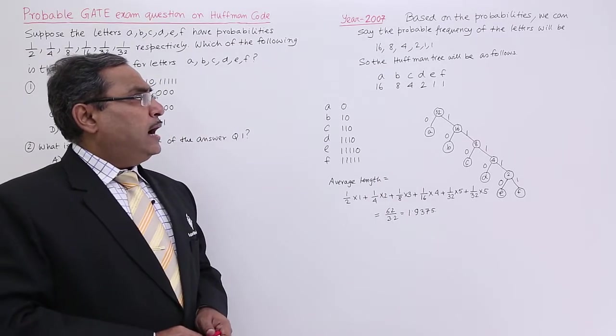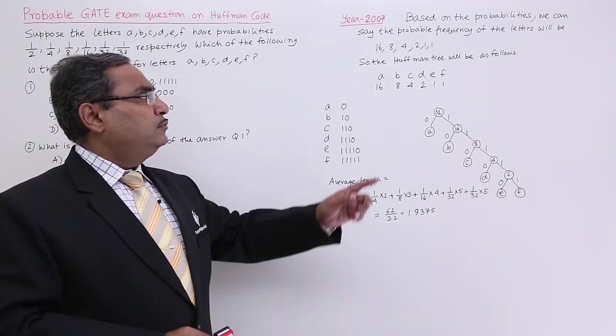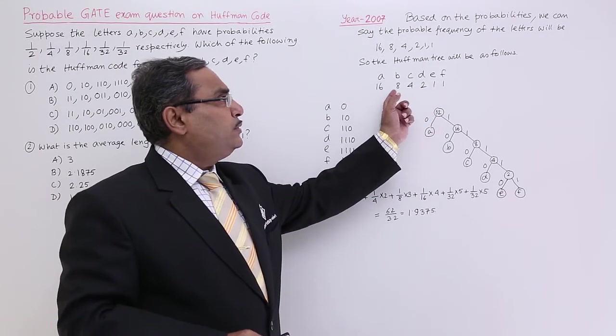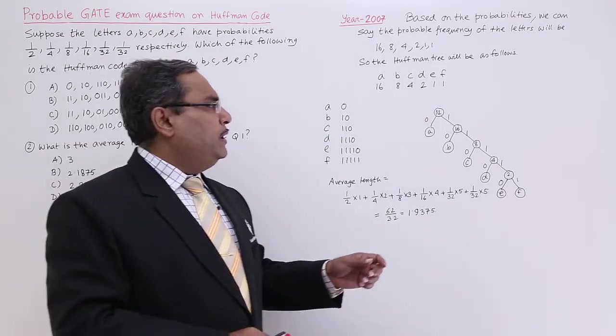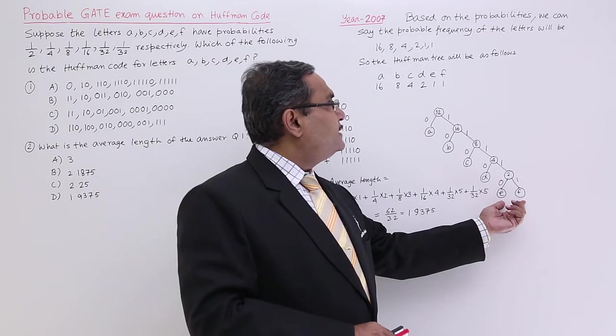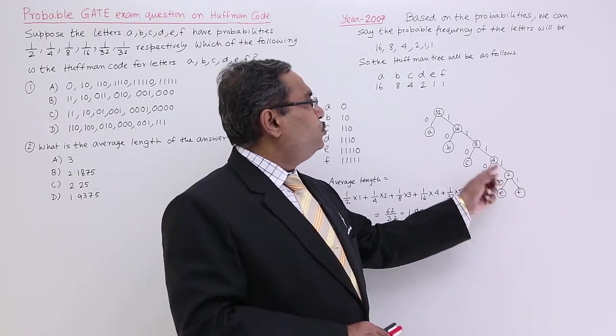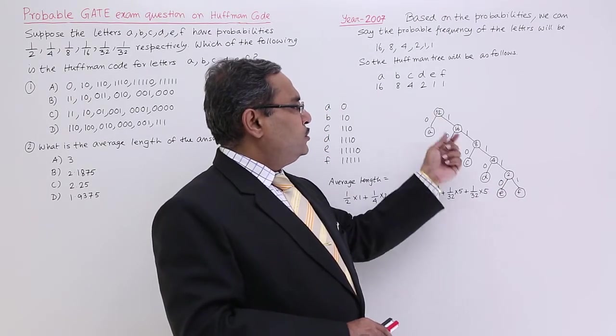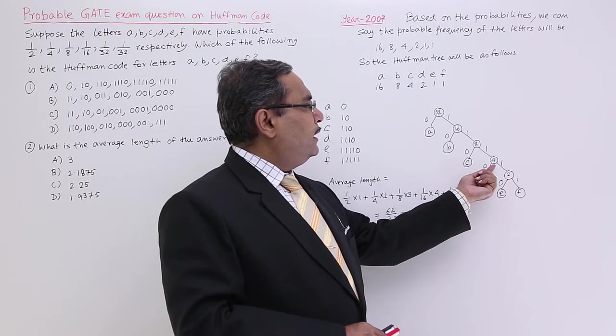The Huffman tree will be formed with this particular 6 letters with these probabilities. I am getting E and F, putting this sum 2. 2 is matching with this, so D and this will form. It will get 4.